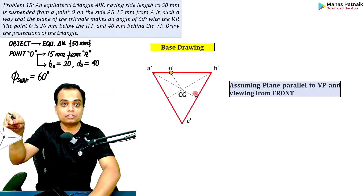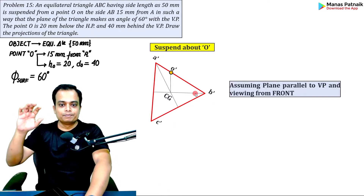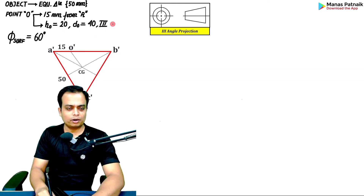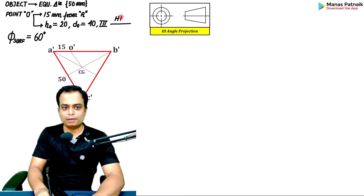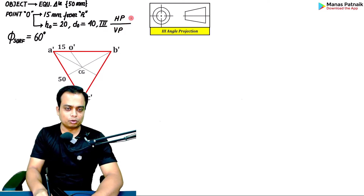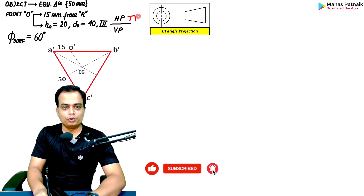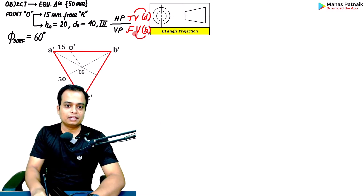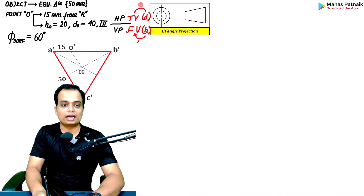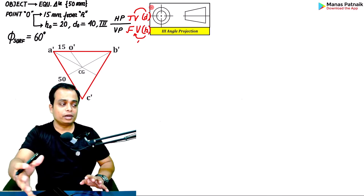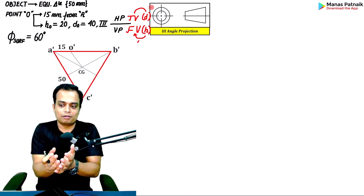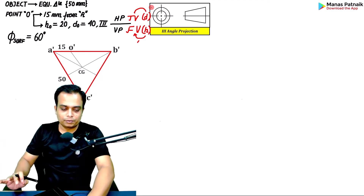In the third quadrant, the horizontal plane is above and vertical plane is below, which means the top view is at the top and front view is below the XY line. Also, 'd' is above and 'h' is below. There is a dash with 'h' and no dash with 'd'. If you haven't seen my videos on projection of points, please watch them for these elementary concepts.